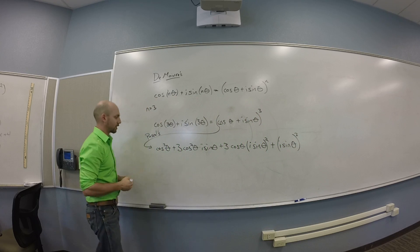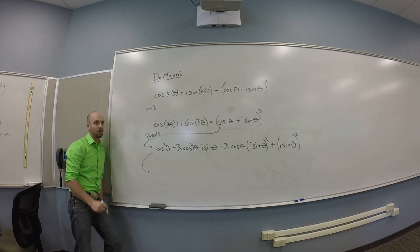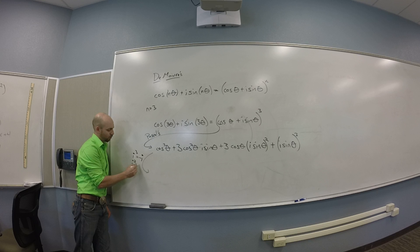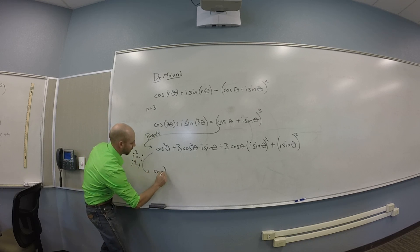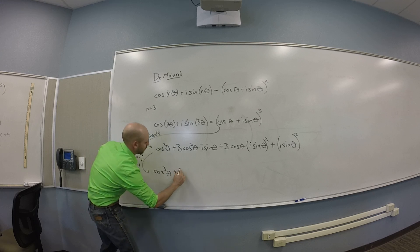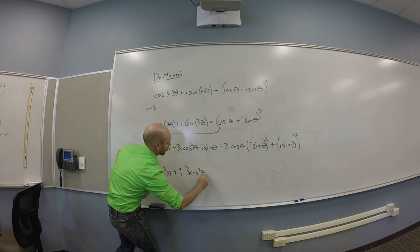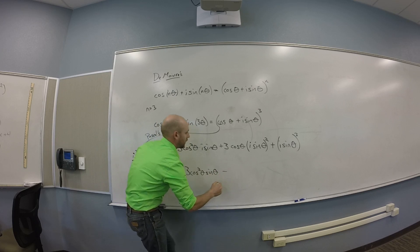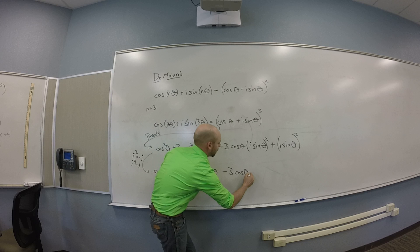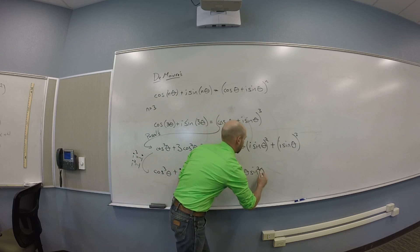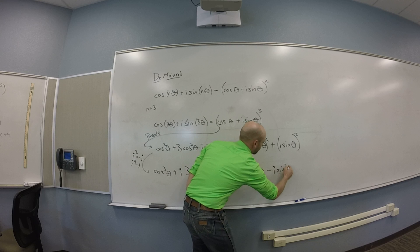Then you need to know something about complex numbers. What's your next step? So i cubed is negative i. So you should get cosine cubed theta plus i times 3 cosine squared theta sine theta minus 3 cosine theta sine squared theta. What do I need there? Squared theta.